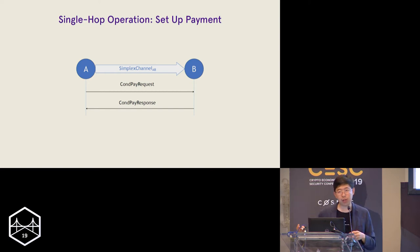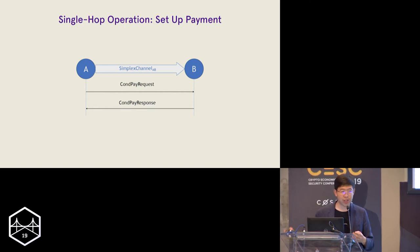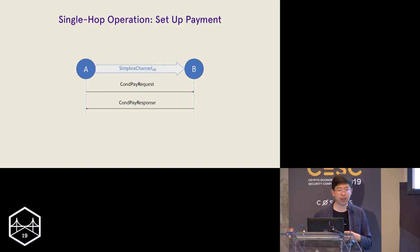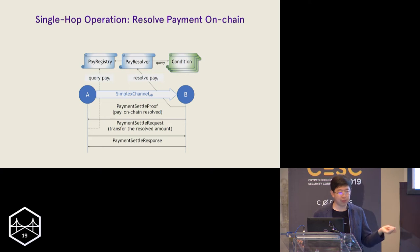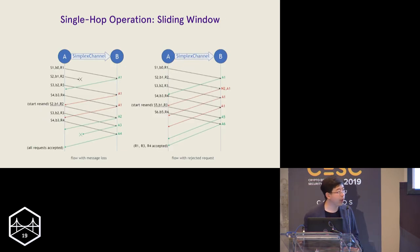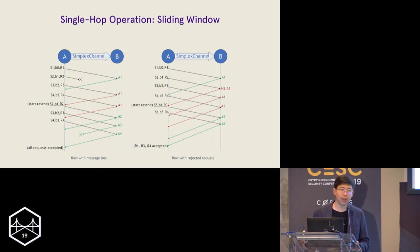That covers the core data structure of the single-hop conditional payment. The important questions on top of that are: how do you set up a conditional payment, how do you resolve it entirely off-chain when everyone is cooperative, and how do you adjudicate the conditional payment result on-chain if some party goes offline or behaves maliciously? We have a series of data protocols that are specifically and highly optimized for payment setup, off-chain settlement, and on-chain result adjudication. Importantly, we also introduced a sliding window protocol for the conditional payment network.